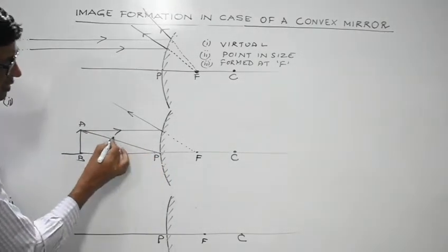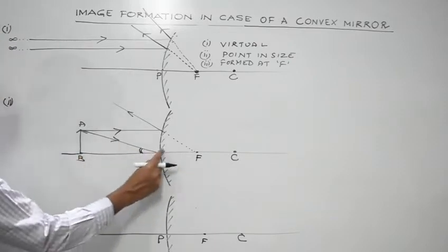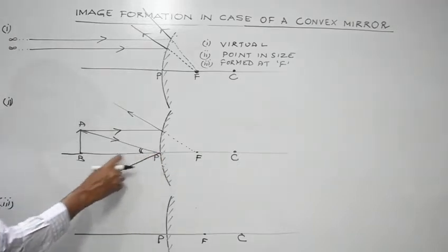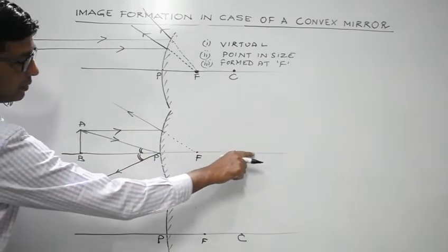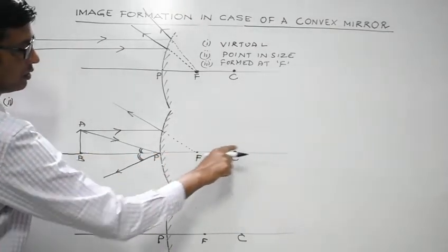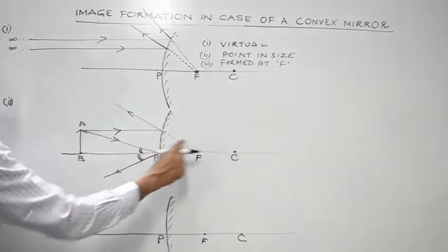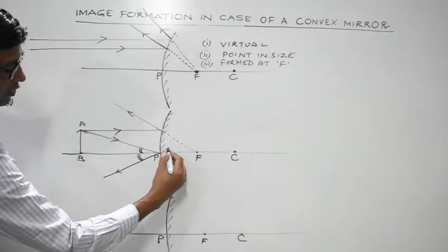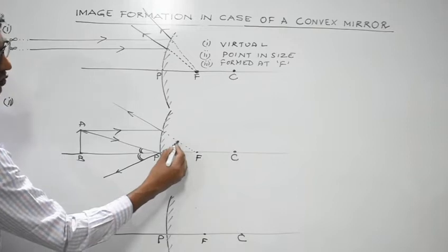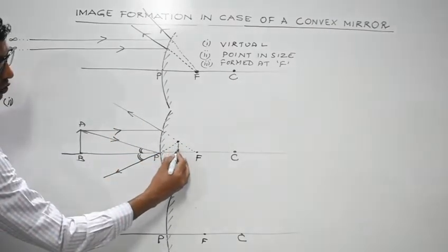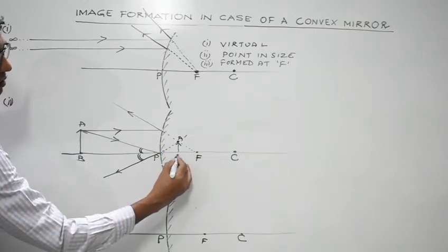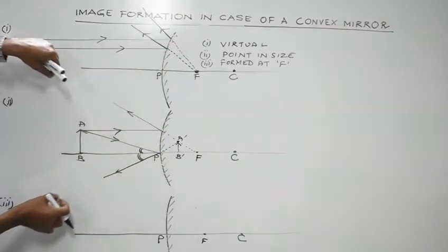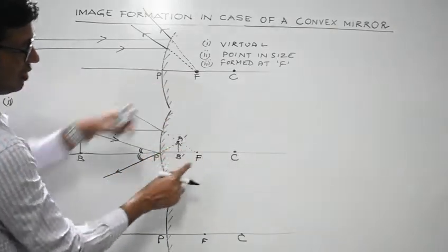The ray incident at the pole: the normal at the pole is the principal axis, so the angle of incidence equals the angle of reflection, and it bounces back into the same medium. Any line joining the center of curvature to a point on the mirror surface acts as the normal. These two reflected rays will never intersect in the front, so we produce them backward and find their intersection behind the mirror.